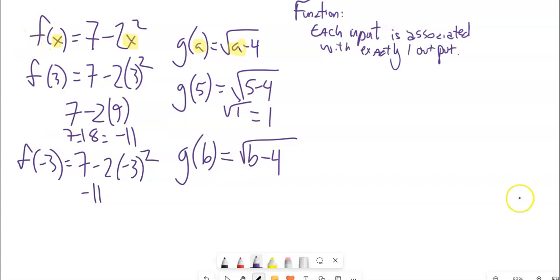If I go back to this F one, if I said, what is F of X plus H? Well, my input is X plus H, that is going to take the place of that X. So it would be seven minus two times X plus H squared, which I could then simplify if I wanted to, if I felt like it.